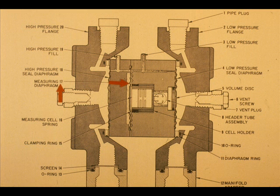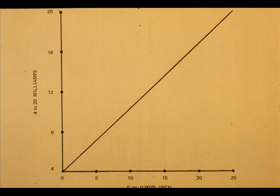The measuring diaphragm, 17, moves only 25 ten-thousandths of an inch for full-range differential. This small movement provides for linear output. The measuring diaphragm movement, caused by differential pressure input, is converted to a 4 to 20 milliamp DC output signal.